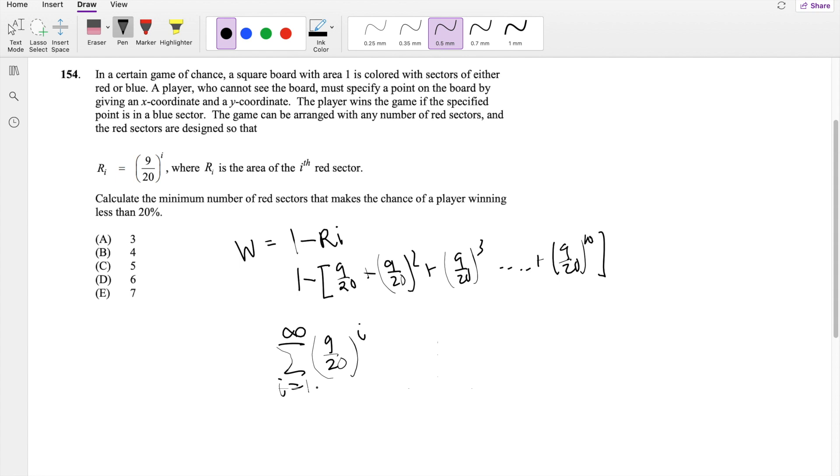Do you agree? If I plug in 1 you get 9 over 20, if I plug in 2 you get 9 over 20 squared. Since this starts from 1, the formula is A1 times 1 minus R to the N over 1 minus R.